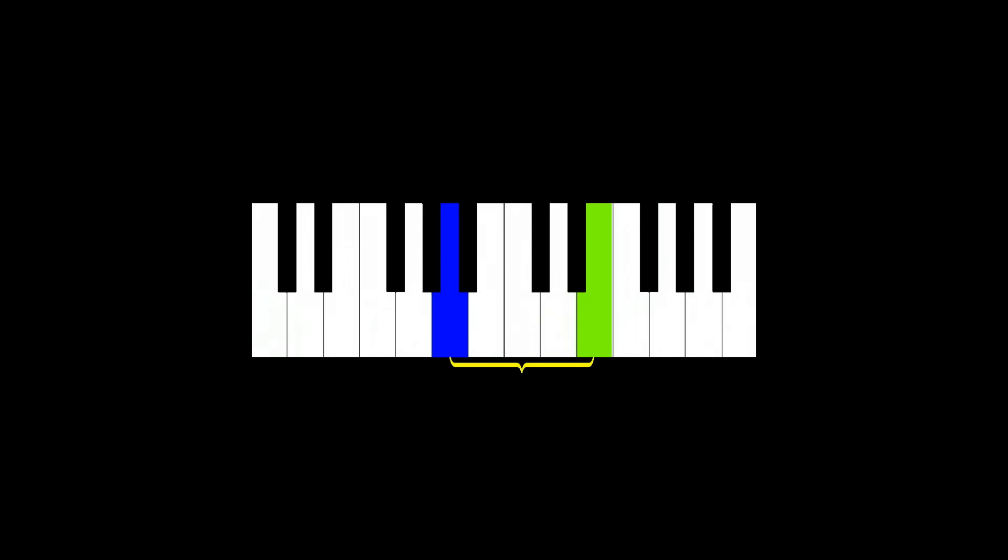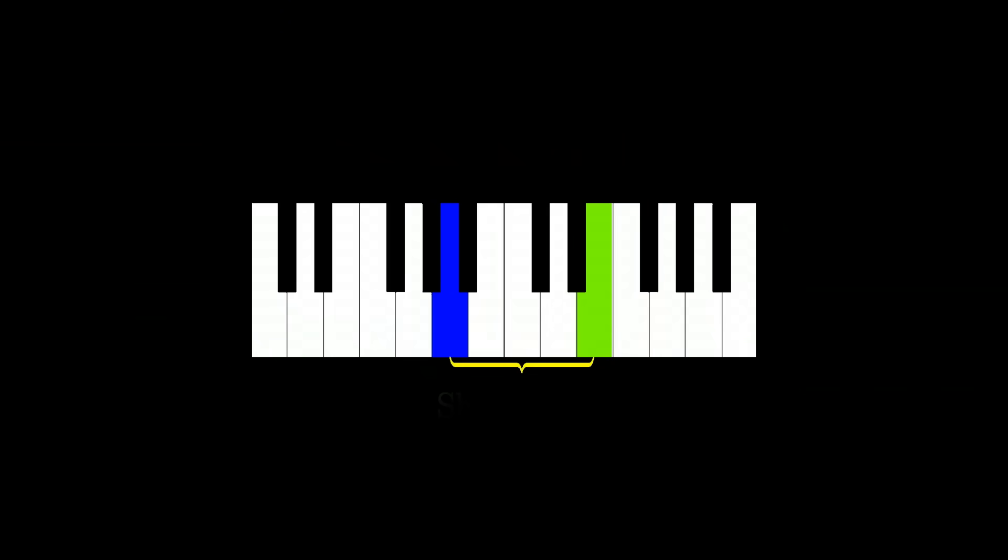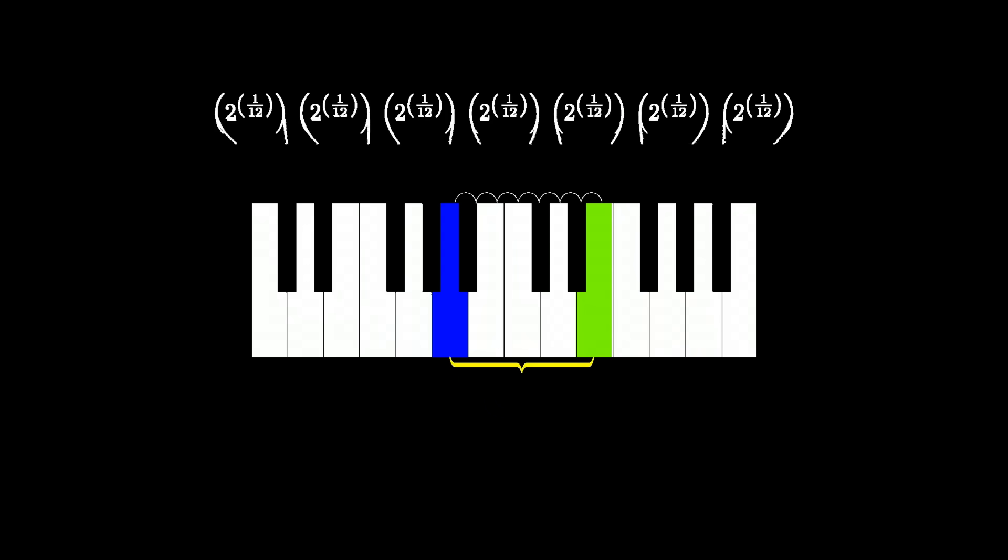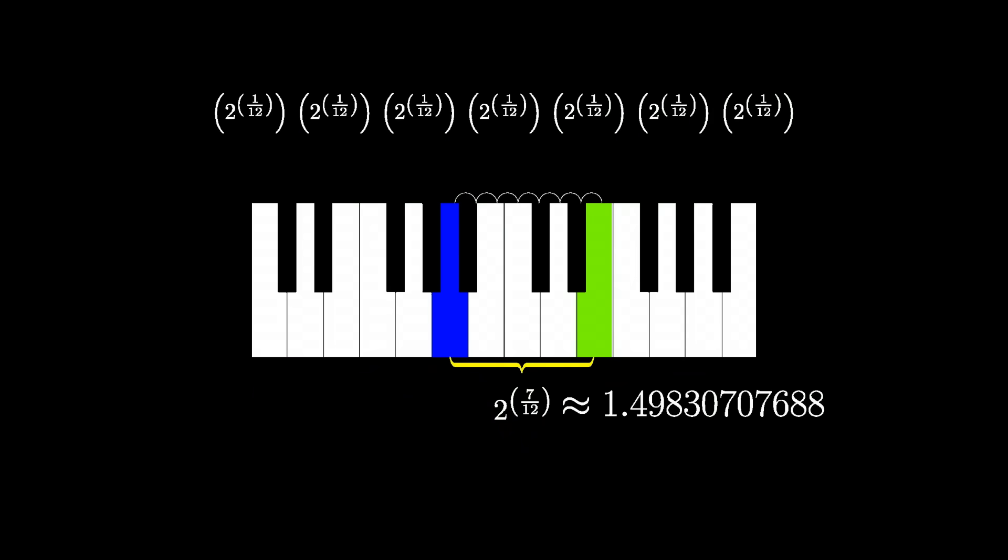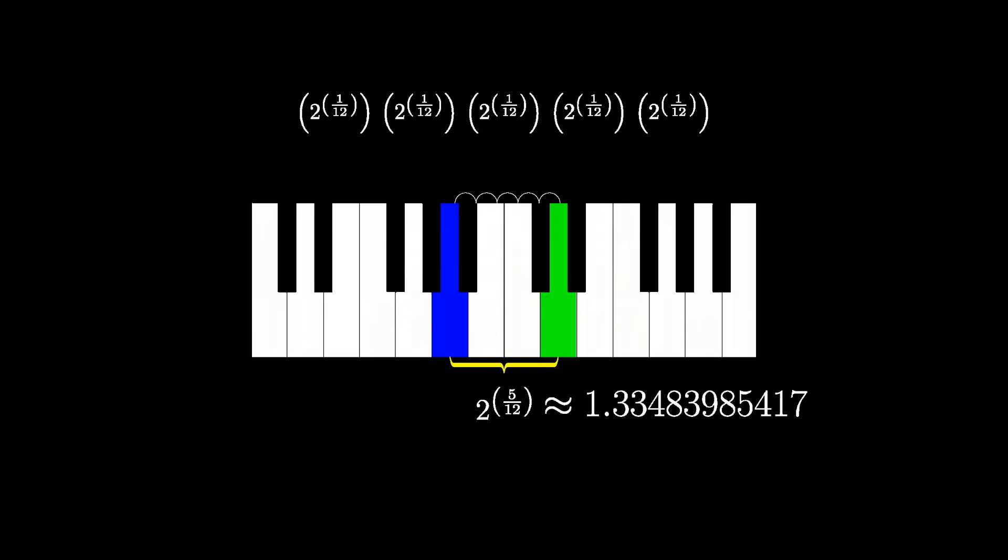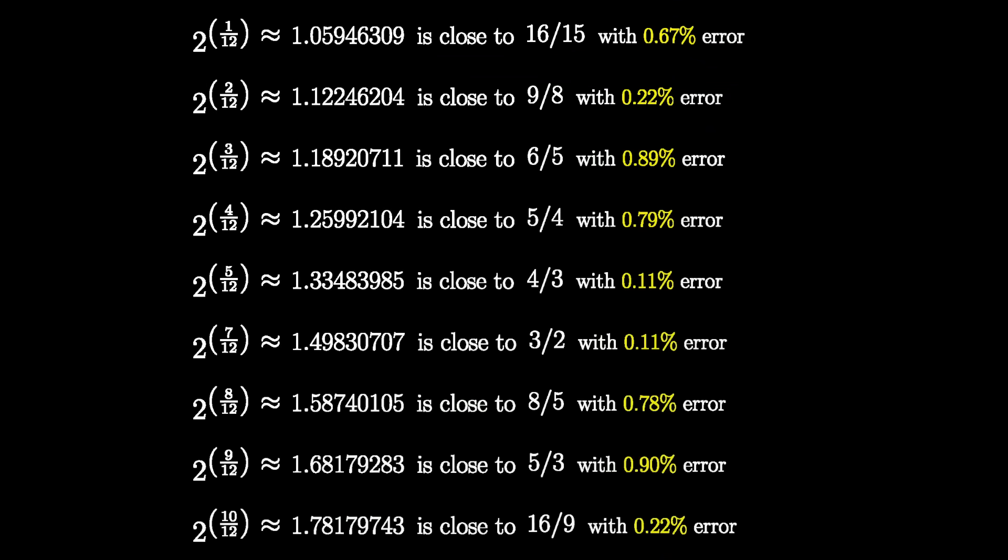This means that if you take a harmonious interval, like a fifth, the ratio of frequencies when played on a piano will not be a nice rational number like you expect, in this case 3 halves, but will instead be some power of the 12th root of 2, in this case 2 to the 7 over 12, which is irrational but very close to 3 halves. Similarly, a musical fourth corresponds to 2 to the 5 twelfths, which is very close to 4 thirds. In fact, the reason it works so well to have 12 notes in the chromatic scale is that powers of the 12th root of 2 have this strange tendency to be within a 1% margin of error of simple rational numbers.